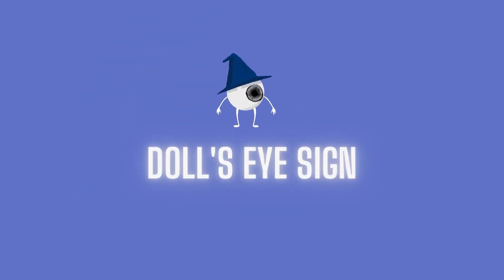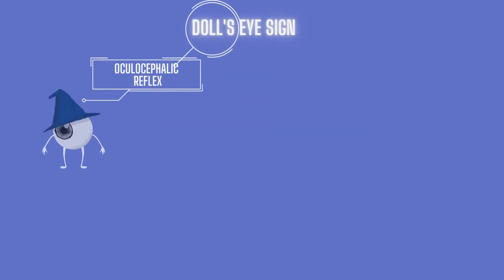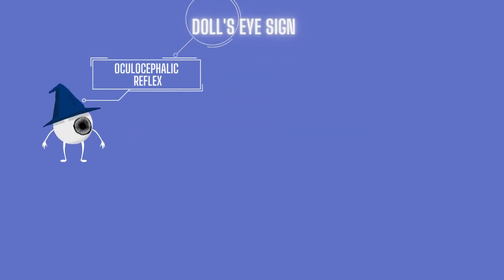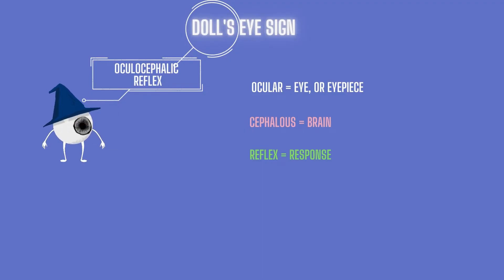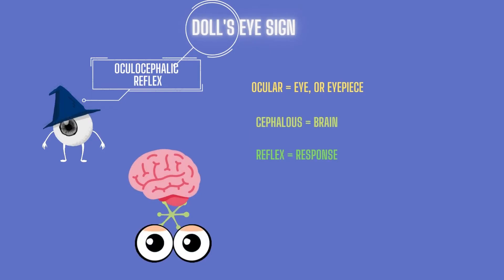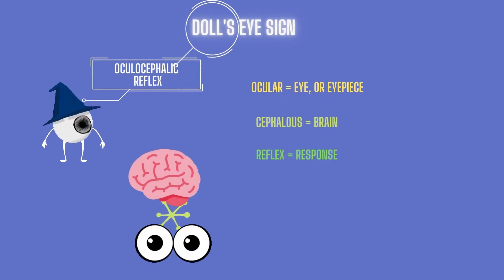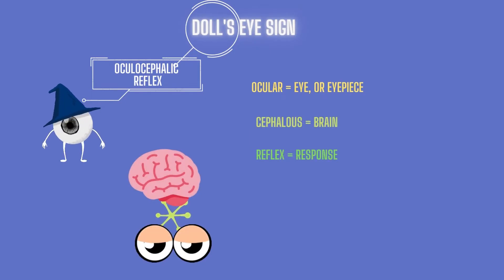The Doll's eye sign is also called the oculocephalic reflex. 'Ocular' means eyes or eyepiece, 'encephalus' meaning brain, and 'reflex' means response. So the oculocephalic reflex is a responsive connection between the brain and the eyes.